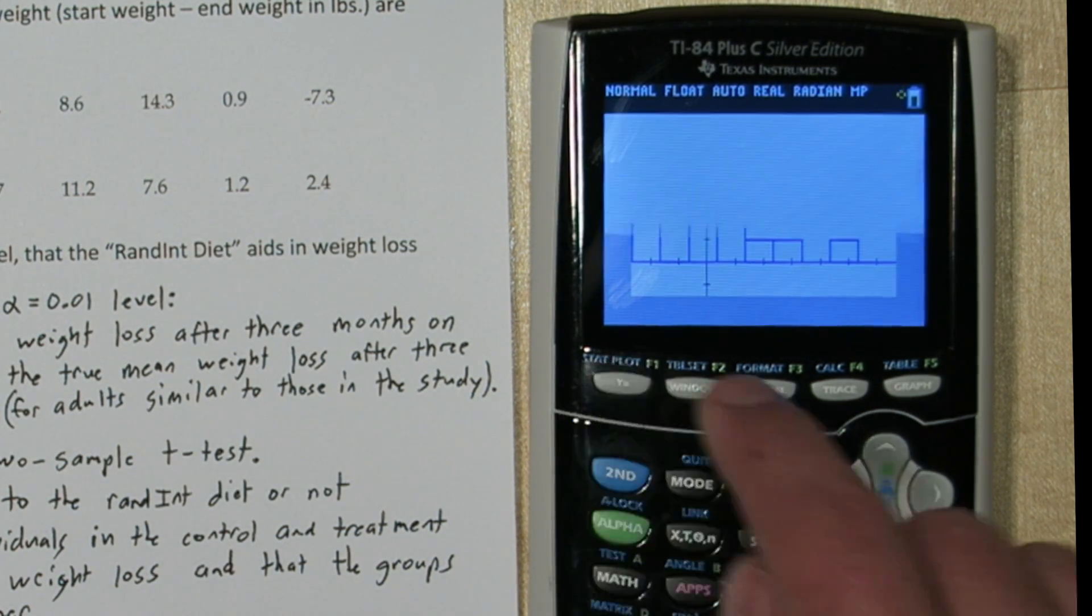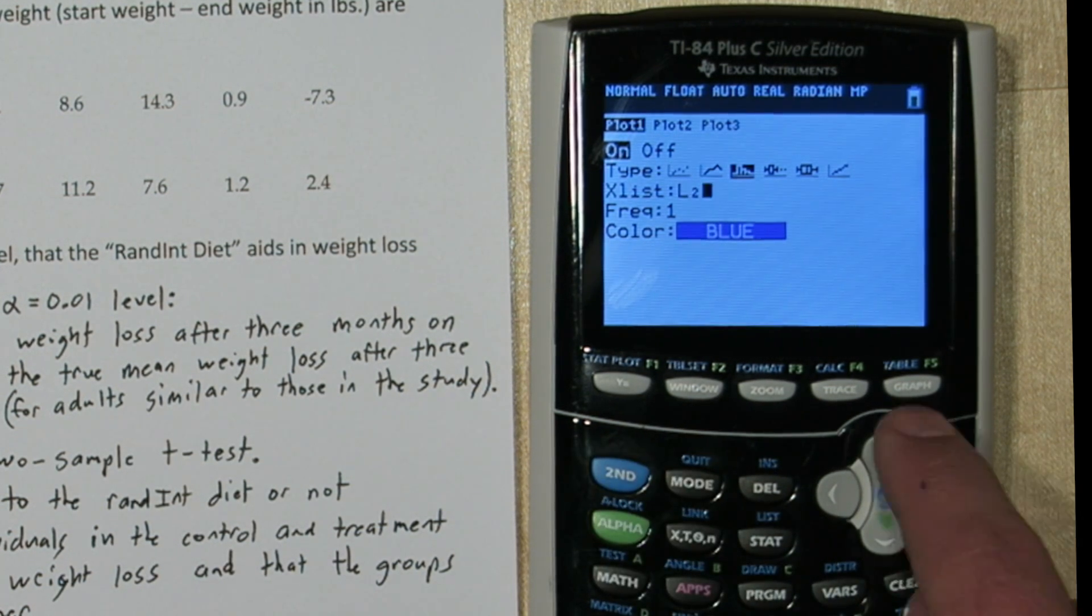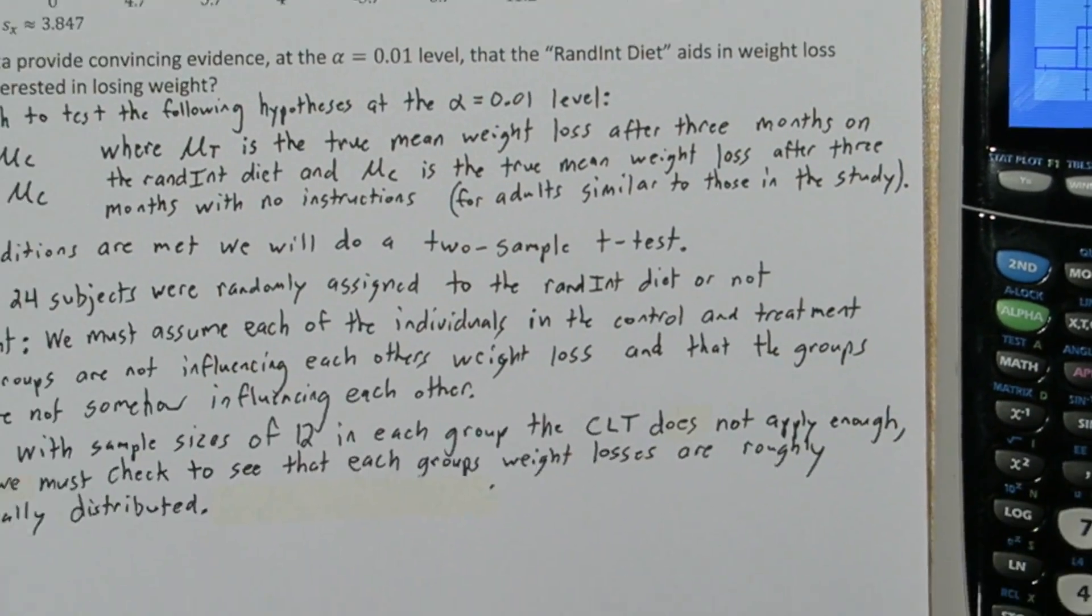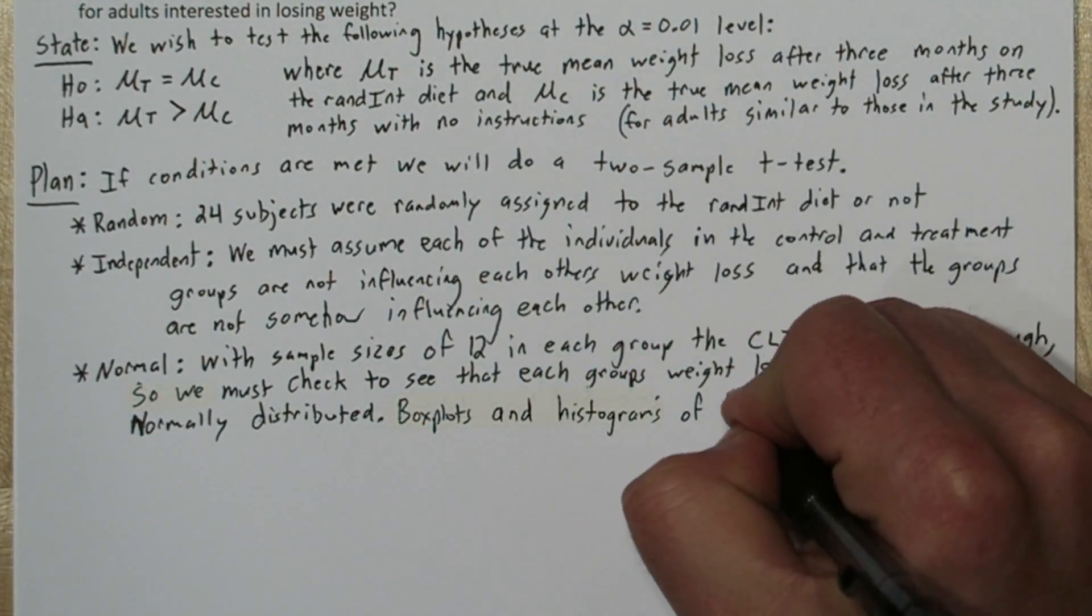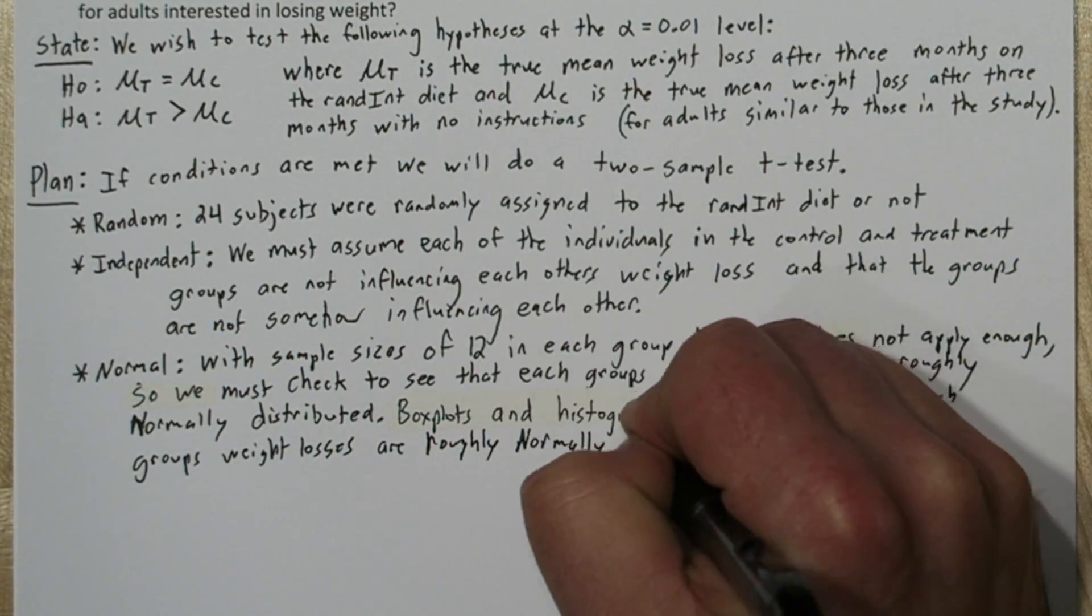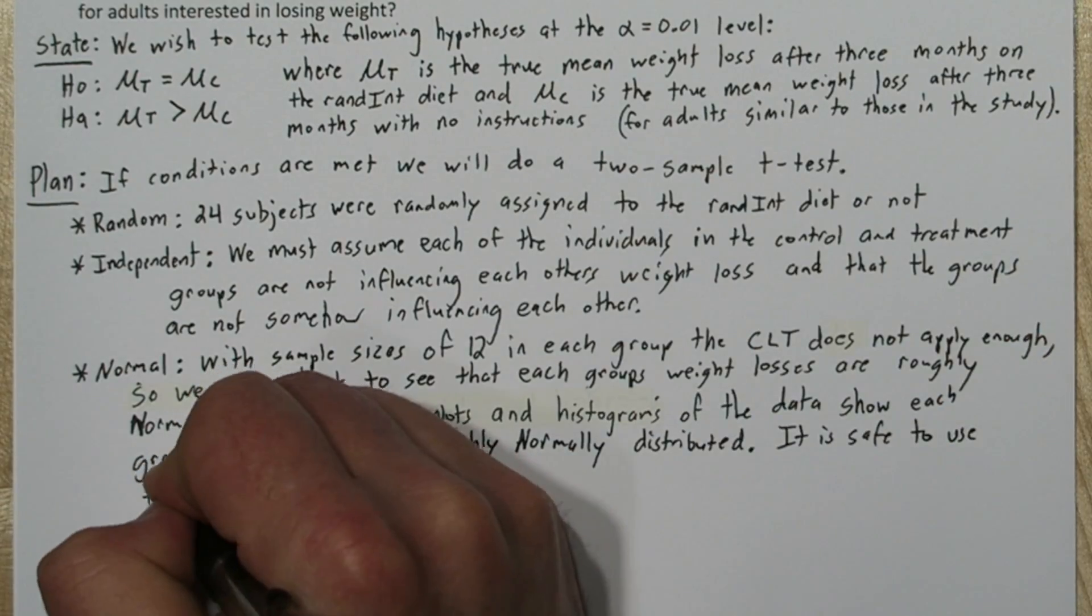Let's check the treatment group. Alright, this one's roughly unimodal and roughly symmetric. Alright we can say box plots and histograms of the data show each group's weight losses are roughly normally distributed. So it's safe to use T procedures.